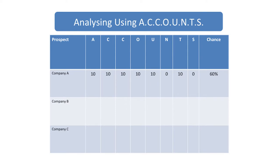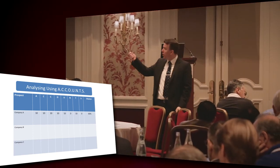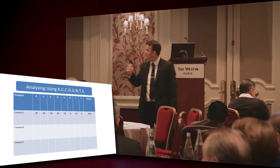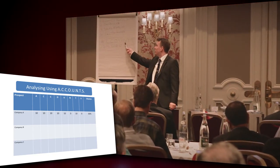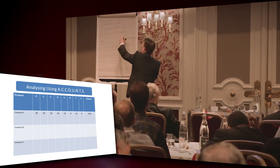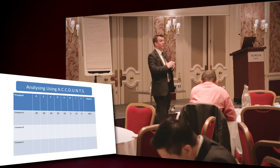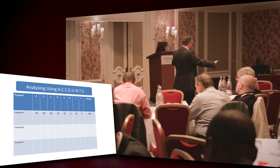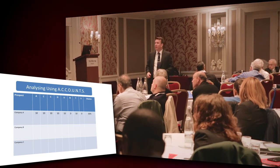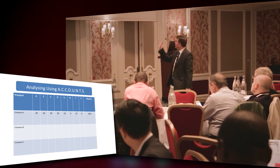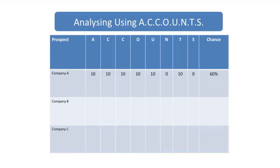We add these scores up, and this does two things for us. Number one, it tells us the ones we should spend our chargeable time on pursuing first as a priority. Number two, it tells us where the holes in our sales strategy are. In this example on the board, everything's in place but they're just not in a hurry — the urgency is not there. So when I go and see them again, I'm going to have to find some reason to move things forward quickly. The example on the screen now shows a 60% opportunity.